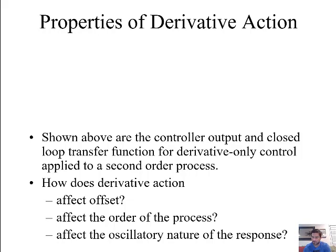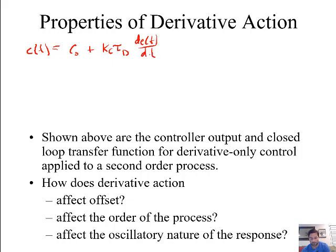So the properties of derivative action. If we think about a PID controller operating in derivative mode only — so the proportional and integral terms are inactive — the position form for the controller output as a function of time would be C equals C-naught (the initial value) plus the derivative term, which is the gain times the derivative time constant times the derivative of the error with respect to time. The transfer function for a derivative-only controller is then KC·τD·s.